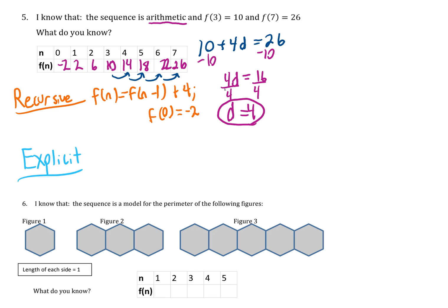Then we can write an explicit formula. We're starting at negative 2, that's the zeroth term, so f(n) = -2 + 4n. We could test that out with 7: if I plug in 7 for n, we'll get 4 times 7, which is 28, and -2 + 28 is 26, so the formula works for 7.